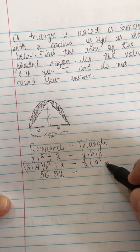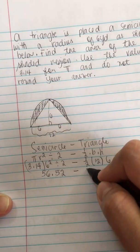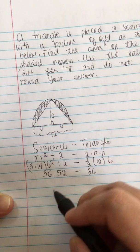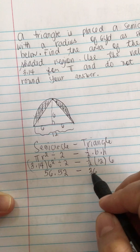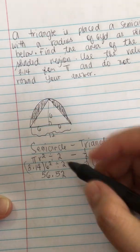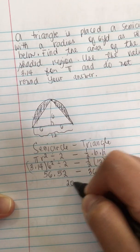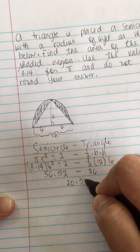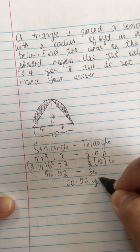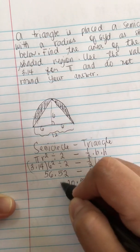Now we subtract 36 from 56.52 and we get 20.52 yards squared.